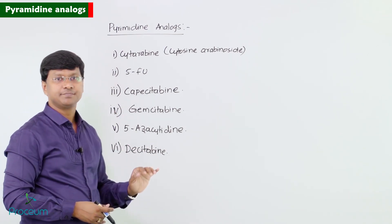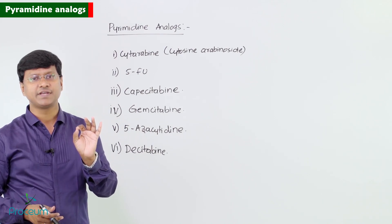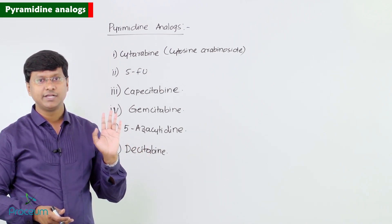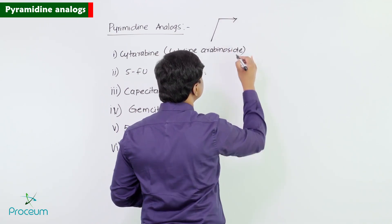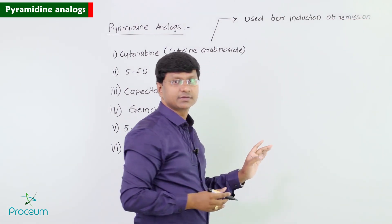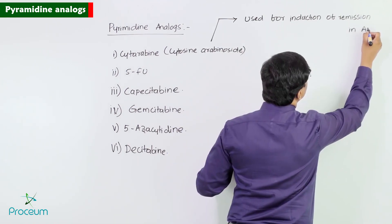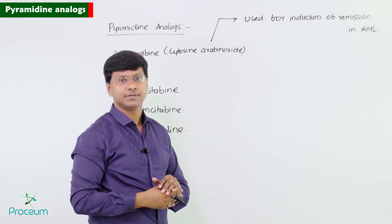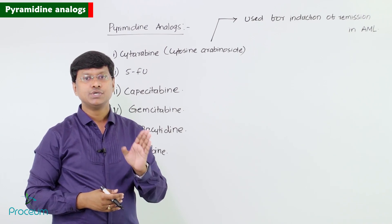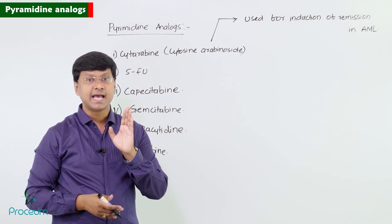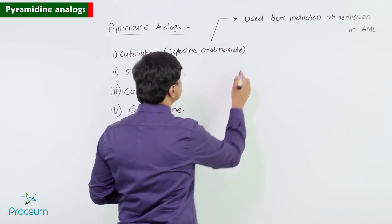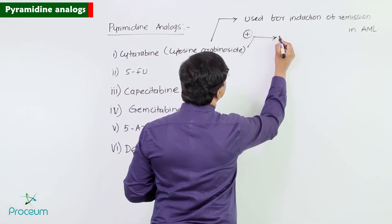Cytarabine is the single most effective agent for the induction of remission in acute myeloid leukemia. Cytarabine is activated by kinases to form arabinoside CTP. This arabinoside CTP is an inhibitor of DNA polymerase.